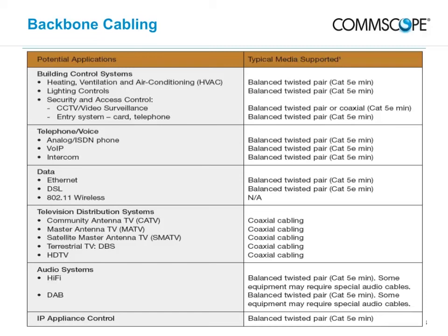This table provides a list of potential MDU applications and their typical supported cabling media. Hence, the most commonly installed backbone cabling is balanced twisted pair and coaxial cabling. However, this is largely dependent on the design of the MDU premises. Some large high-rise complexes may have backbone distances that exceed the application distances supported by copper cabling. In these cases, optical fiber cabling will be required. The respective service provider should be consulted regarding this requirement.